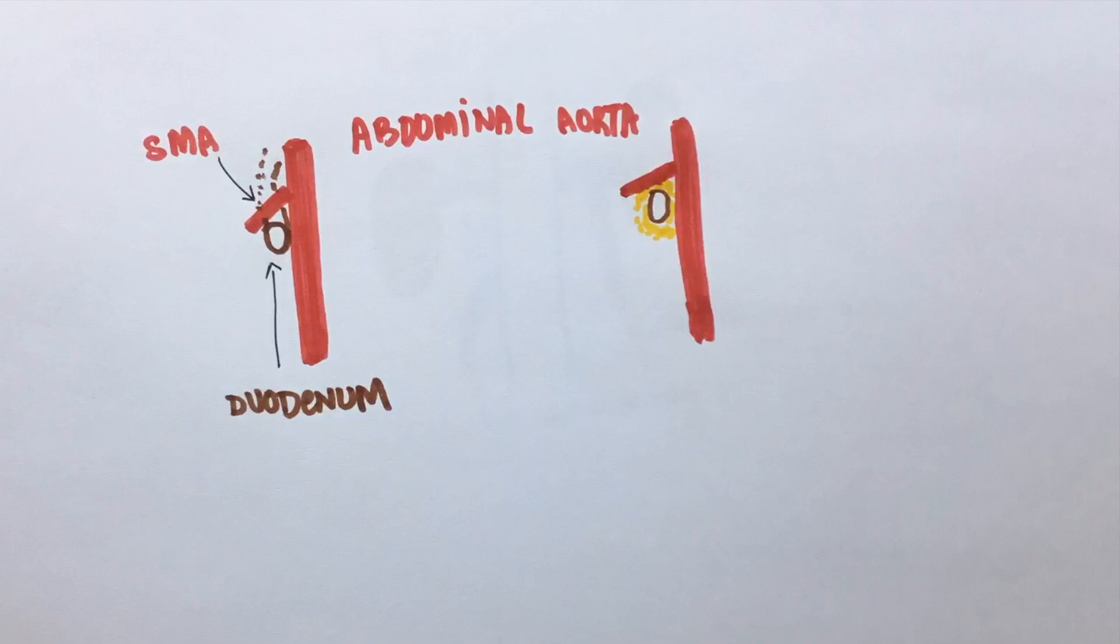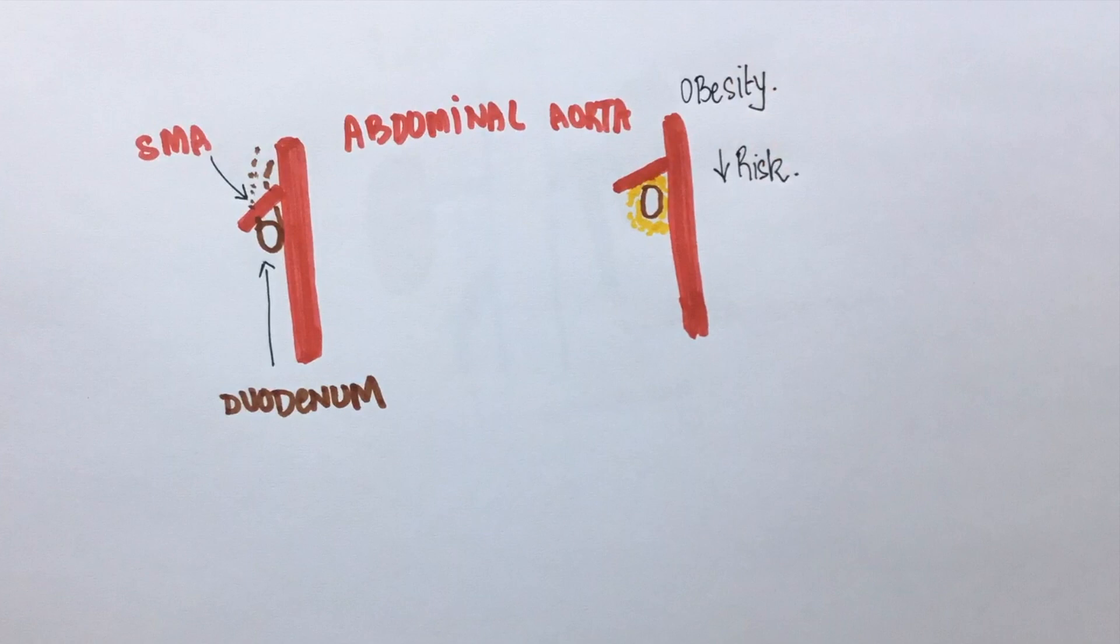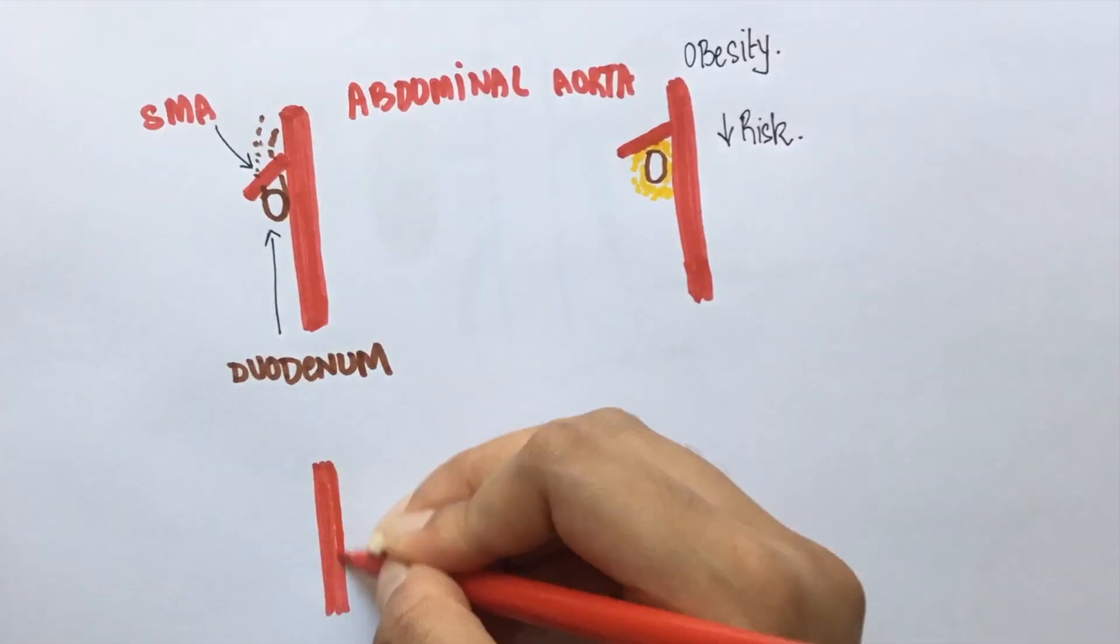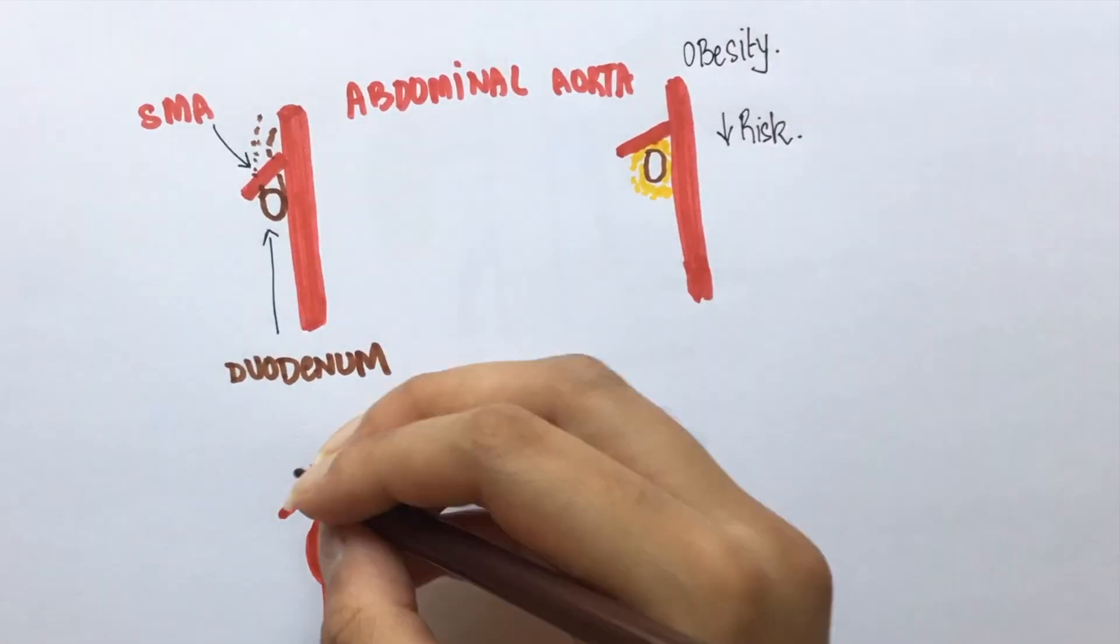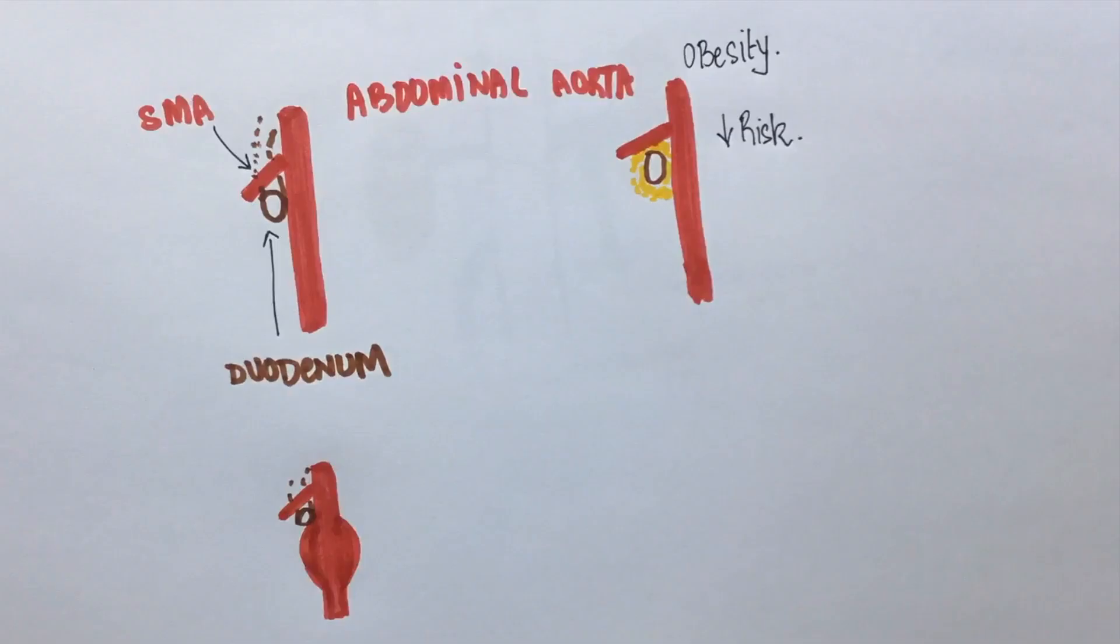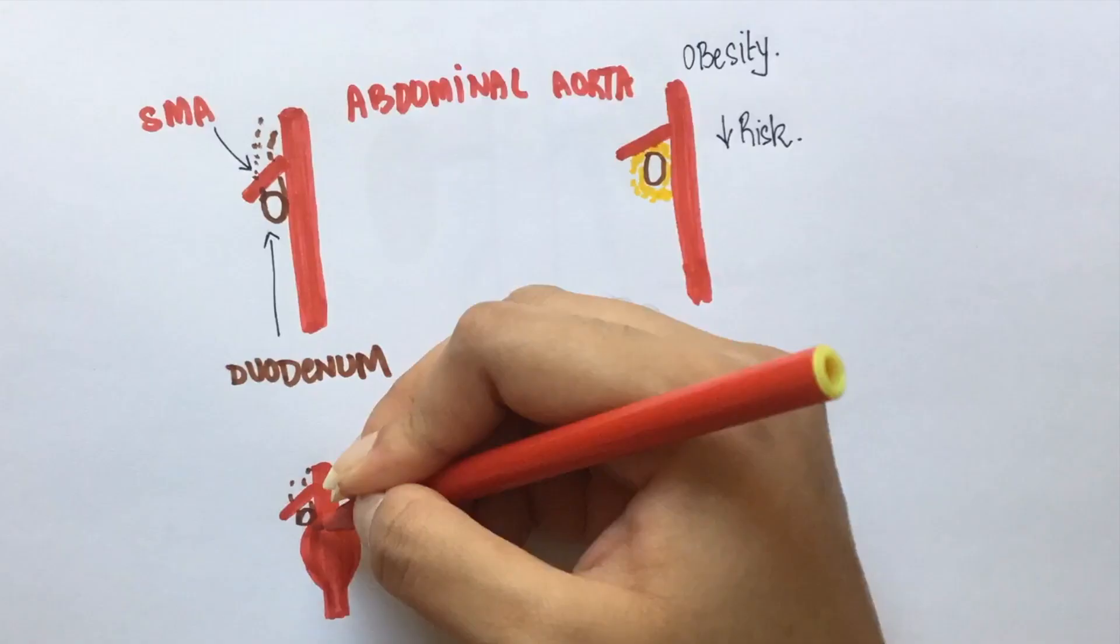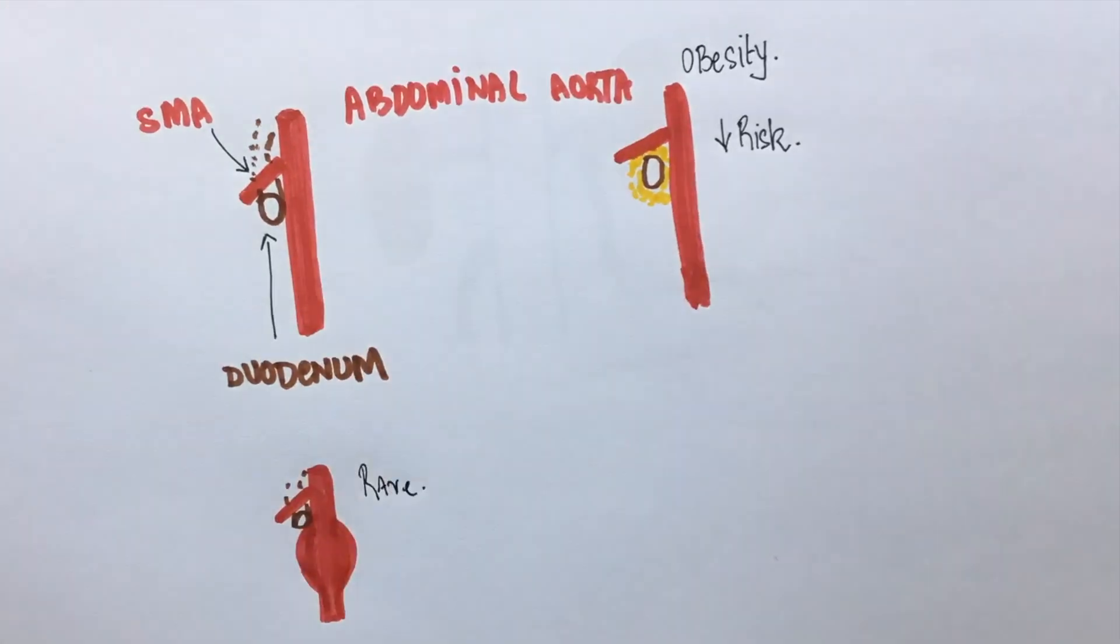When there is an abdominal aortic aneurysm, the aorta bulges and has a chance of reducing this angle. This is extremely rare, but it does predispose patients to developing superior mesenteric artery syndrome.